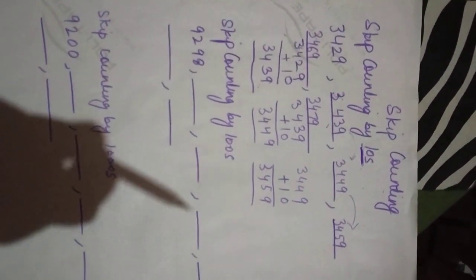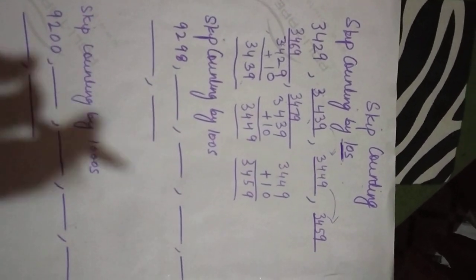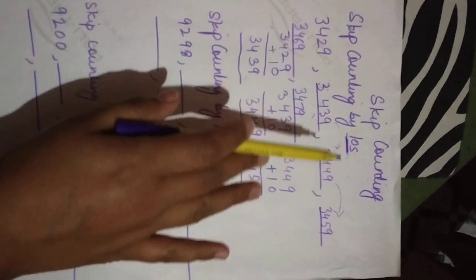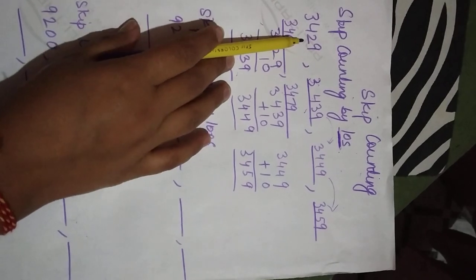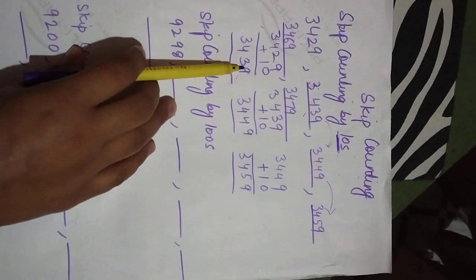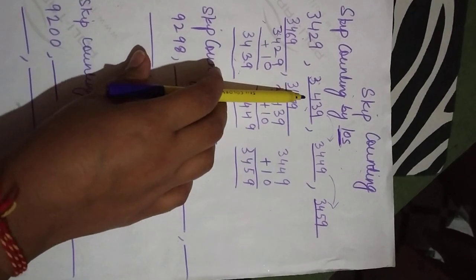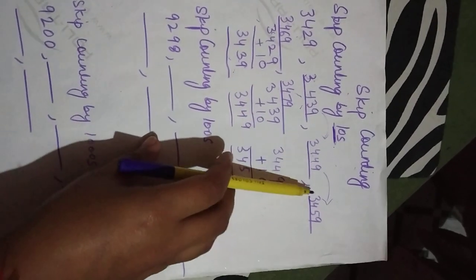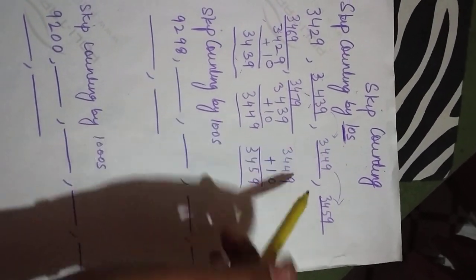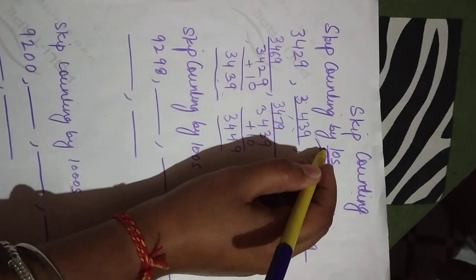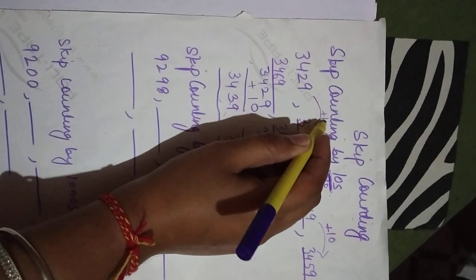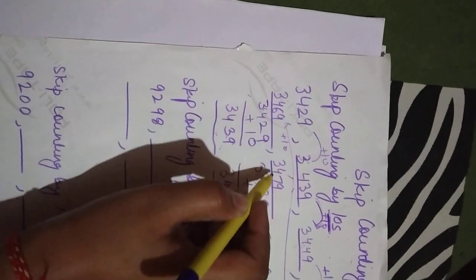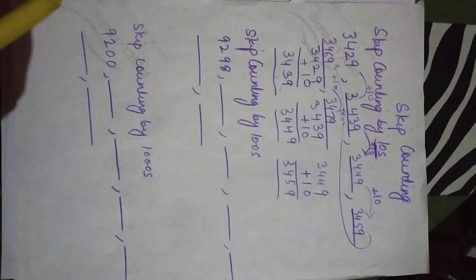Skip counting means you have to go with the previous number you have — the last number you got — and add 10 to get the next number. So if I add 10 to this number, I will get the next number. Similarly, if I add 10 in this number, I will get this number, and if I add 10 in this number, I will get this number. I hope you understood.